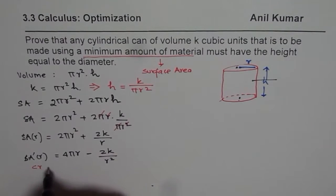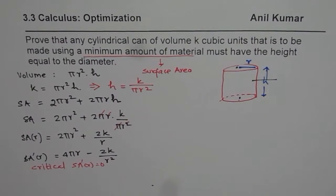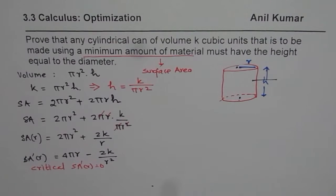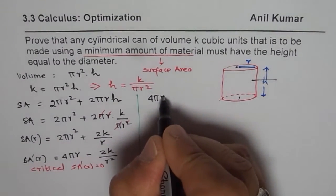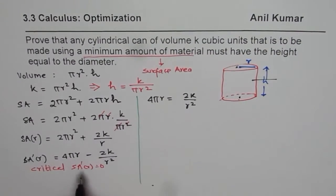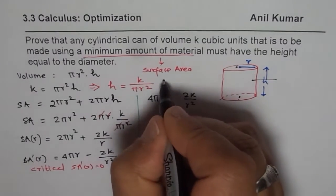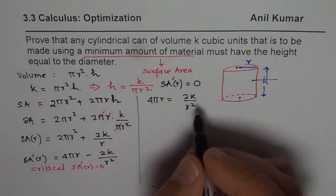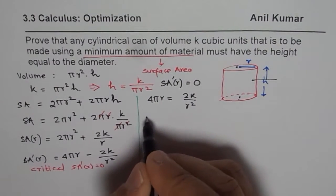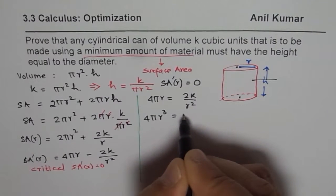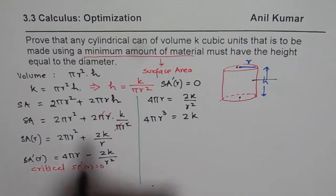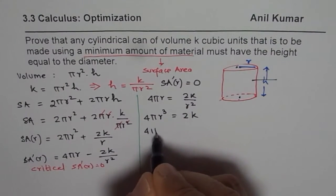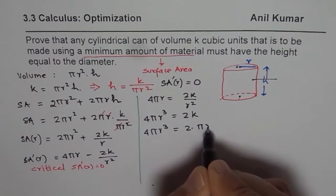To find the critical point we equate the derivative to zero. So we set 4πr = 2k/r², which means the rate of change of surface area is zero. Cross-multiplying gives 4πr³ = 2k. Now what is k? k equals πr²h, so we can write this as 4πr³ = 2πr²h, relating radius back to height.